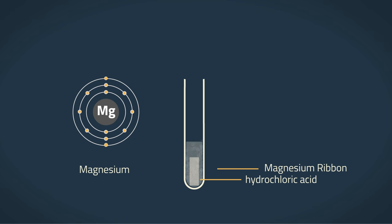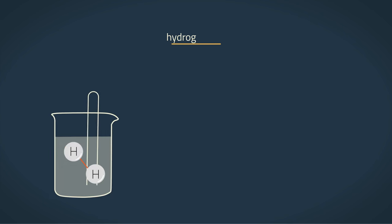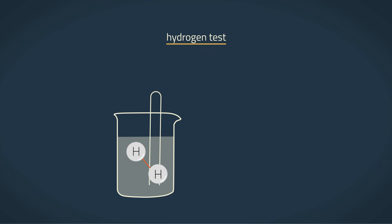Magnesium metal reacts with hydrochloric acid to produce hydrogen gas and dissolved magnesium. We can test the presence of hydrogen gas by placing a lit splint at the mouth of a test tube. If we hear this distinctive squeaky pop, it means that hydrogen has indeed been produced.